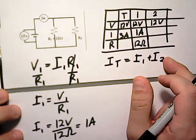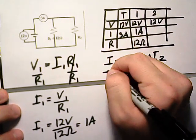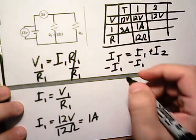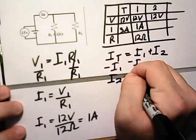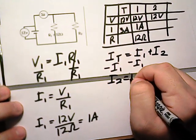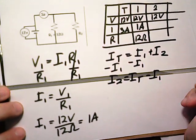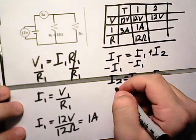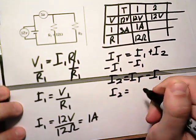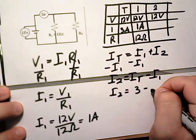We want to find I2, so we'll subtract I1 from both sides. So I2 is going to be equal to I total minus I1. So I2 is going to be equal to 3 minus 1.